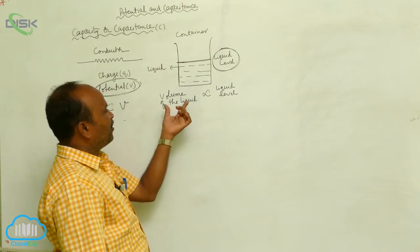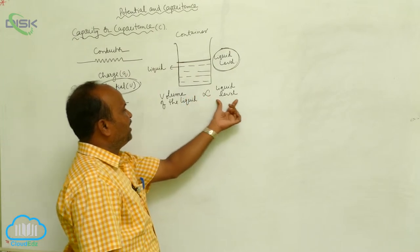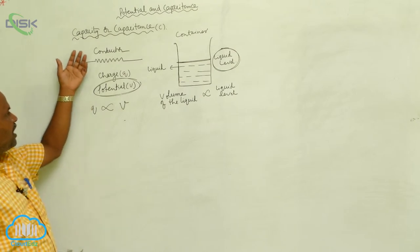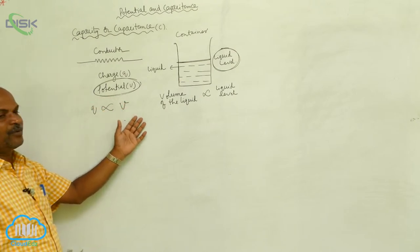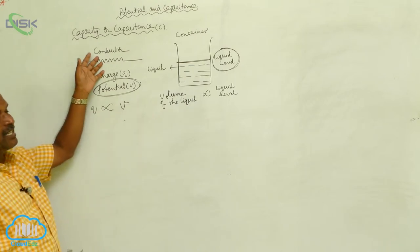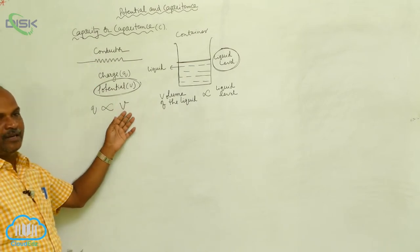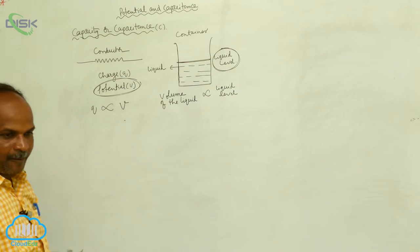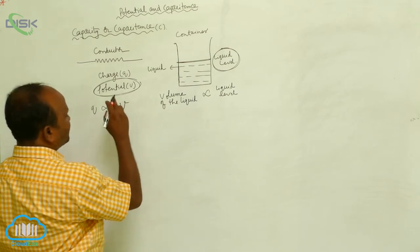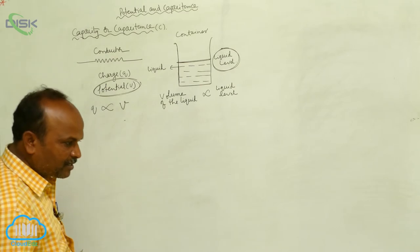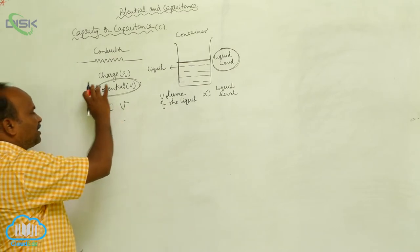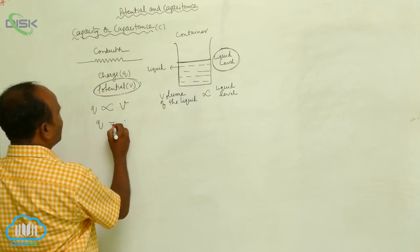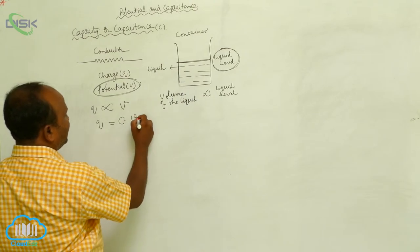Therefore, just as more liquid level means more volume of liquid, the charge on the conductor is directly proportional to the potential. More charge given to the conductor means the conductor is at higher potential. Less charge means less potential. Therefore, Q is directly proportional to V, which means Q equals some constant times V.